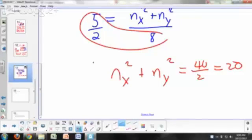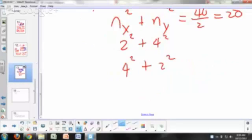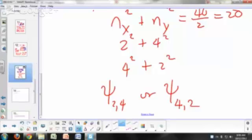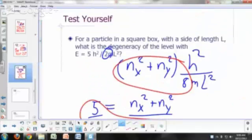2 squared plus 4 squared is 20. Or it can be 4 squared plus 2 squared. So your quantum states would be n sub x equals 2, n sub y equals 4, or n sub x equals 4, n sub y equals 2. Is there any other way you can get a sum of 2 squares equal to 20? It's just 16 and 4, the 2 perfect squares that add up to 20. So what's the answer to this question? The degeneracy of this energy level is 2.